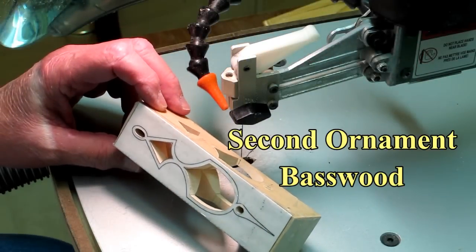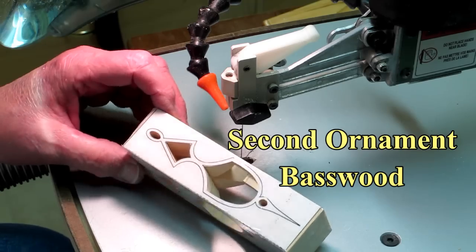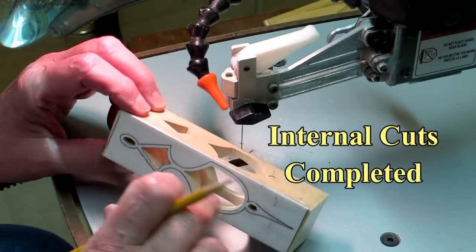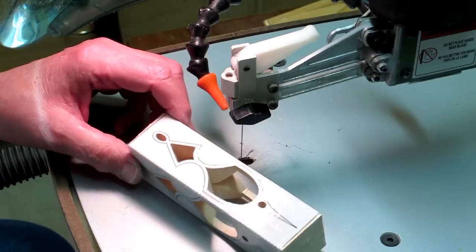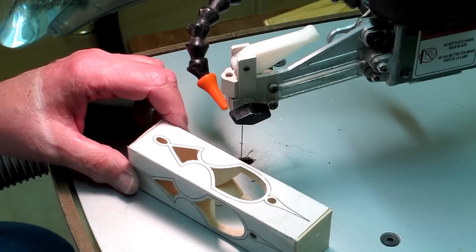This is the ornament with the basswood. So far it's cut out very nicely, very smooth. You don't get the sudden grain changes like you do with a piece of oak or pine.